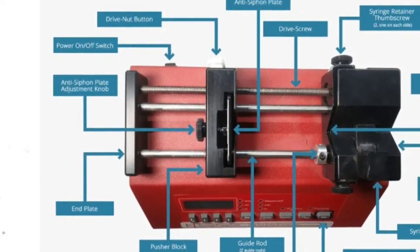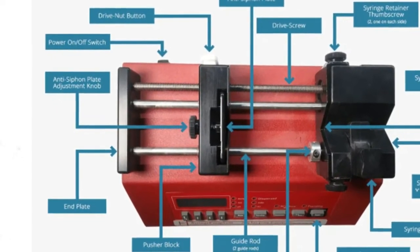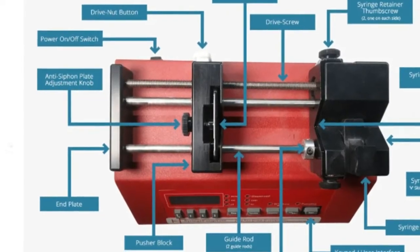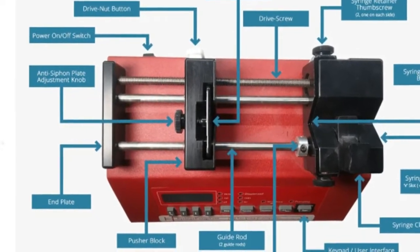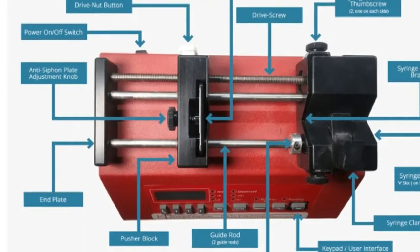The third component is a pusher block. The pusher block is driven by the lead screw and is supported by guide rods and the lead screw. The pusher block captures the syringe's plunger flange.